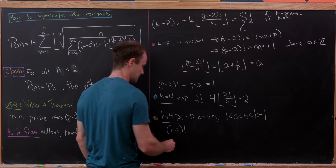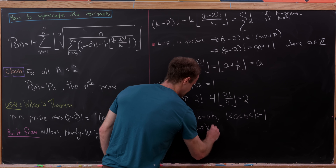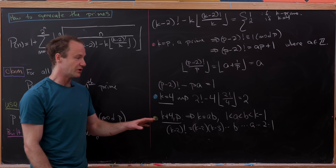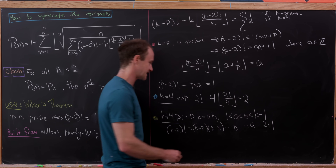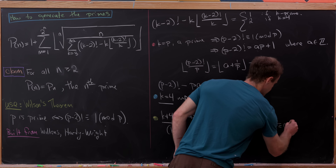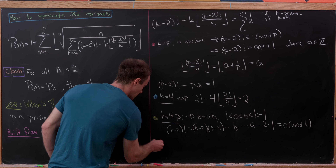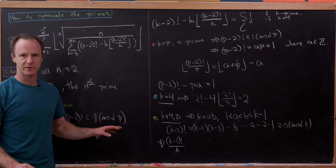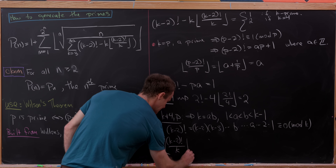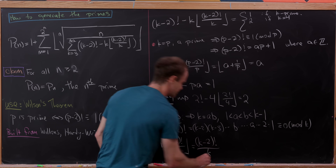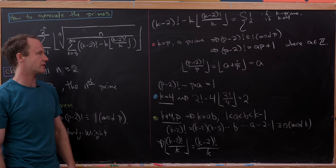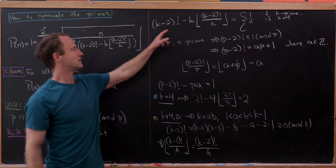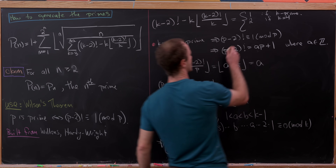With that factorization, (k minus 2) factorial equals (k minus 2) times (k minus 3) descending, and along the way you hit both b and a. Multiplying those together gives a times b equals k, making the whole factorial a multiple of k — congruent to 0 mod k. So (k minus 2) factorial over k is an integer, meaning the floor doesn't change it, and the two k's cancel, giving zero. So the inner expression equals 0 when k is composite and not 4.